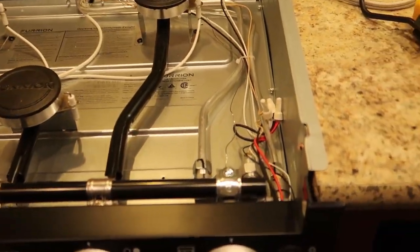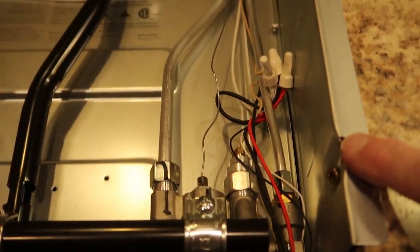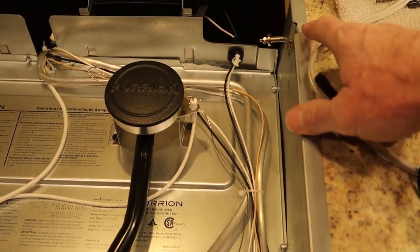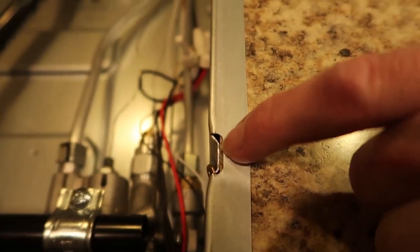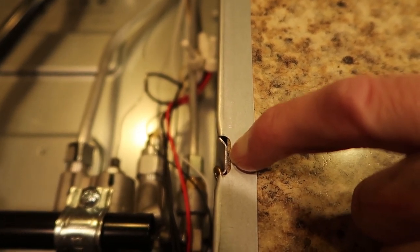The range is held in place with four screws. We have one on each side at the front and then one on each side at the back. Let's tighten the screws so that outer ledge right there tightens up right against the countertop.